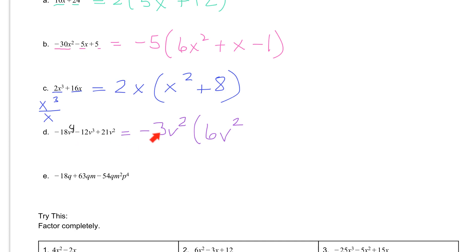Negative 12 divided by negative 3 is positive 4, so we have plus 4v. Then v to the third divided by v squared leaves us with v. Finally, 21 divided by negative 3 changes this to negative 7, and v squared divided by v squared is just 1, so the v is not there anymore.